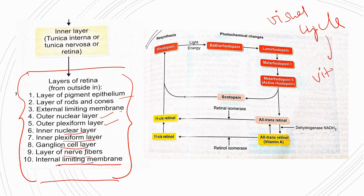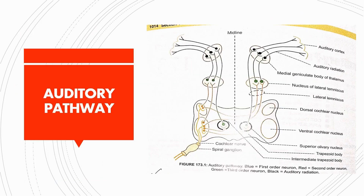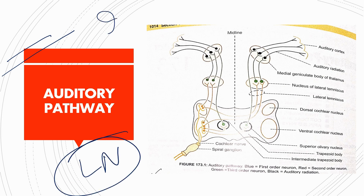This is the visual cycle — the last topic for today. I have already taught it in a previous lecture on vitamin A. This is the visual cycle you must include in your answer sheet. The last topic will be on the auditory pathway — important as a long note. This diagram is highly recommended; you should include it in your answer sheet for the auditory pathway.